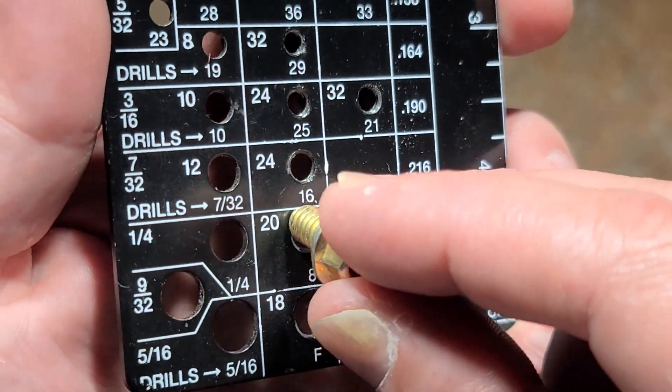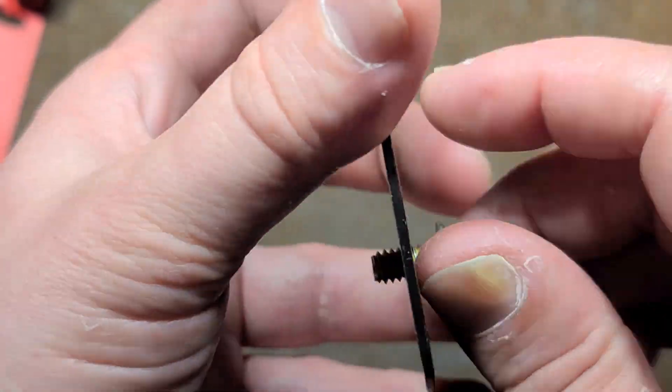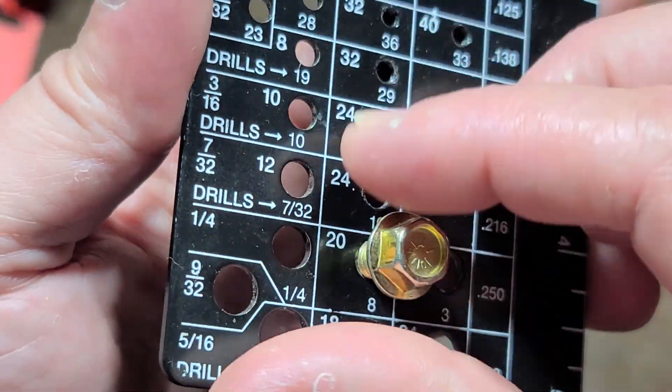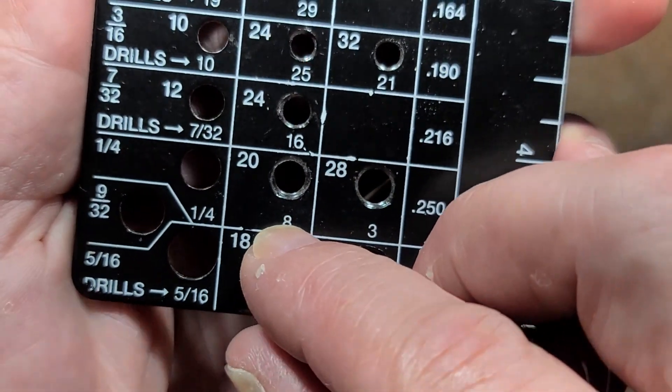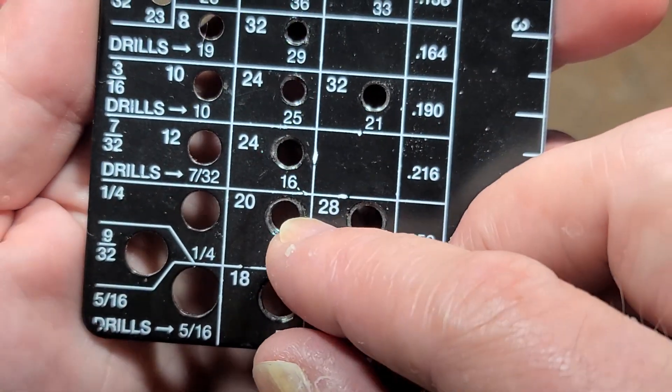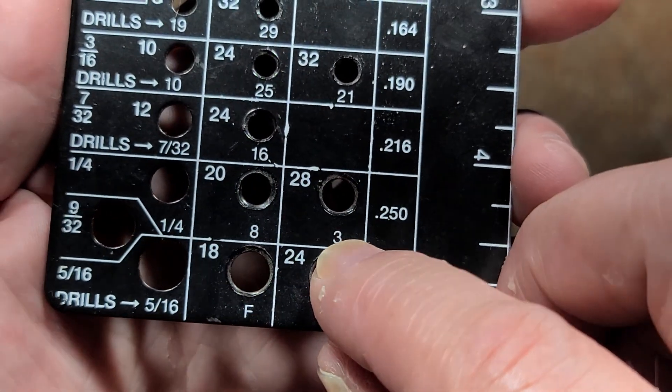So on this quarter inch 20, these are threaded holes so you can use it to check and figure out what threads your fasteners are. And we can see this is obviously quarter inch 20. And then this number down here is a number eight drill, which is what you drill to tap a 20 thread. Now if you wanted to do fine thread, then you'd use a number three drill.